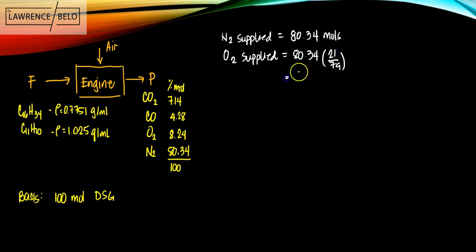So that we know how much oxygen was supplied. And then in here, you know that you have some excess O2. We can solve first for the amount of oxygen unaccounted for to be able to solve for the amount of water. So O2 unaccounted for is equal to 21.36, which is the supplied,